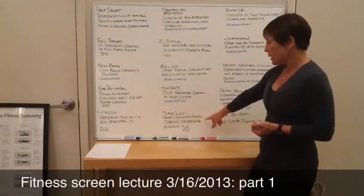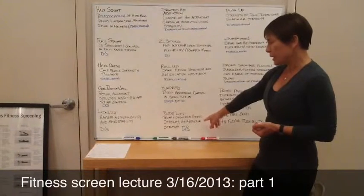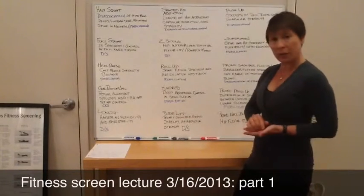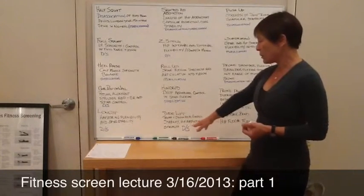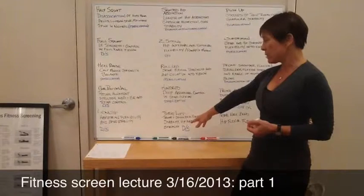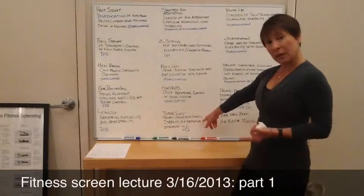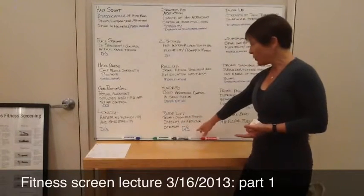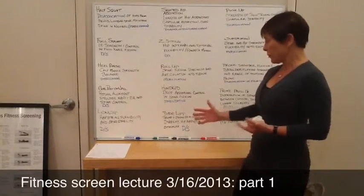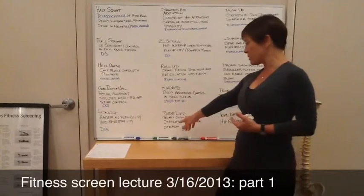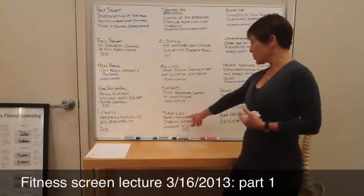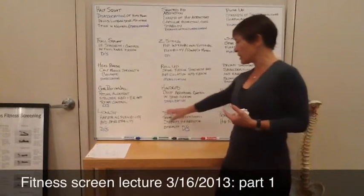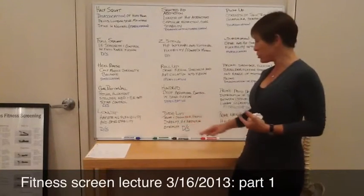The side lift tests trunk and shoulder girdle stability, and hip abductor strength. We're looking at the ability to disassociate — with that lift of the leg into hip abduction testing hip abductor strength, we've got to have stability of the trunk as well. So the hip abduction requires disassociation, while the trunk and shoulder girdle stability speaks to the stabilization component.